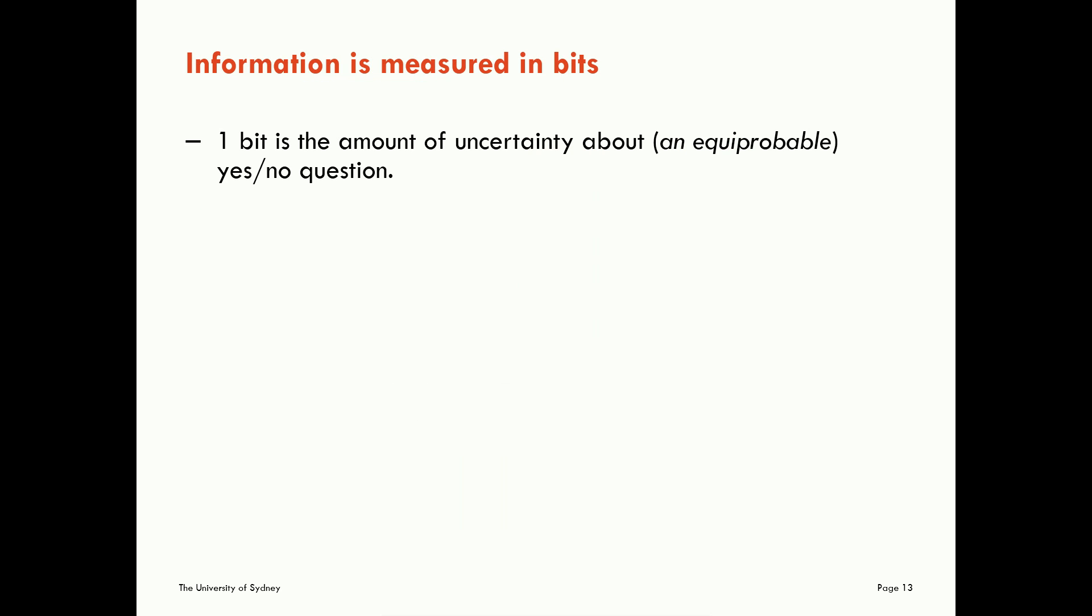Okay, importantly, we normally measure information in bits. One bit refers to the amount of uncertainty about an equiprobable yes or no question. Does my coin flip give me a head or tail? Is the next person to walk through the door a male or a female?